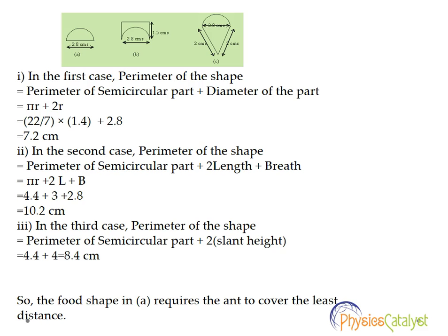For the first case, the perimeter of the shape would consist of the perimeter of the semicircular part and the diameter of the part. So perimeter of the semicircular part is given by πr and diameter is given by 2r, where r is the radius of the circle.